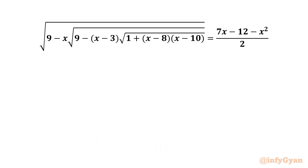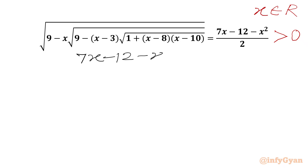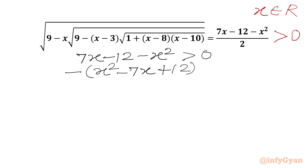Here we have to find all real values of x. Let's get started by writing that the square root must be positive for real x. We will begin with our RHS side only. So we will write 7x minus 12 minus x squared — this should be positive. Or we can take minus common, so x squared minus 7x plus 12 should be positive. Now we will multiply this inequality by negative 1 and the inequality will get reversed, so x squared minus 7x plus 12 should be negative.